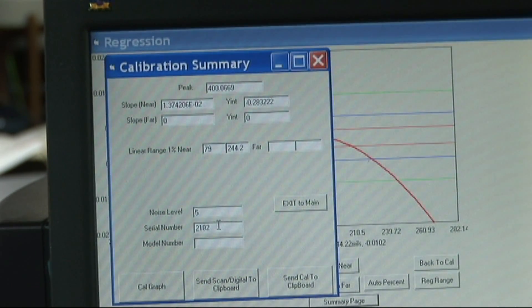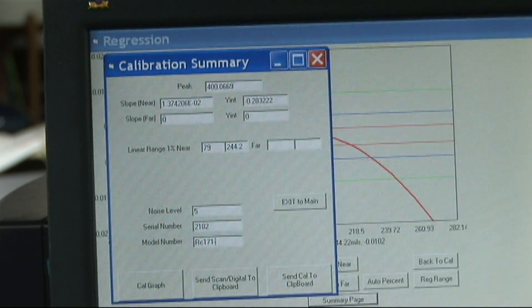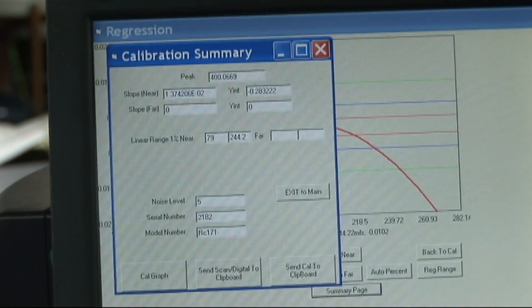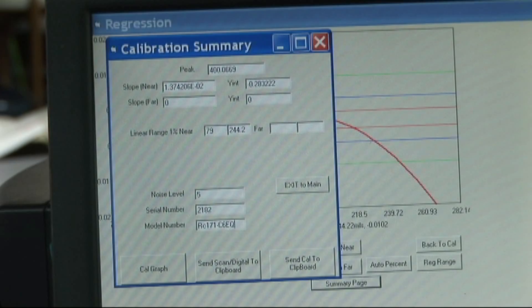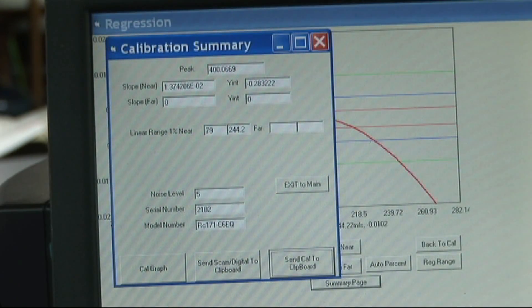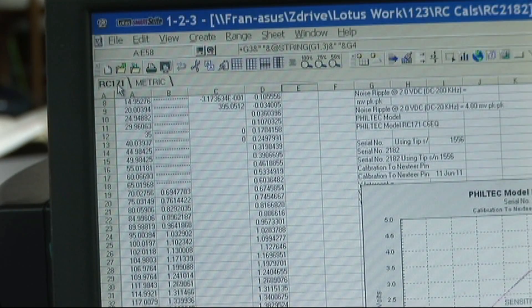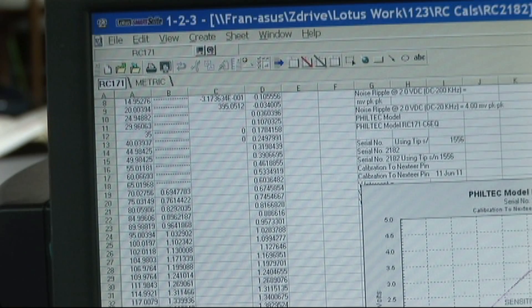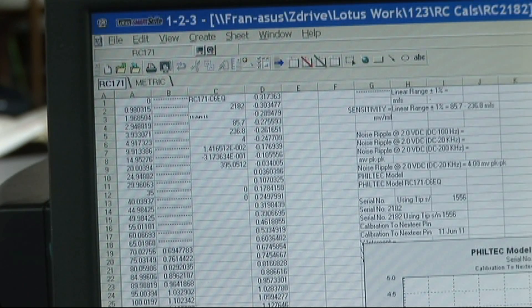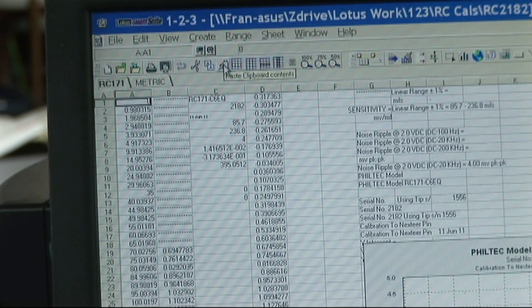Actually, we're going through a whole calibration here for you. Model numbers RC171, C6EQ. Send it to the clipboard, and we're going to bring this in to the spreadsheet, paste it in.